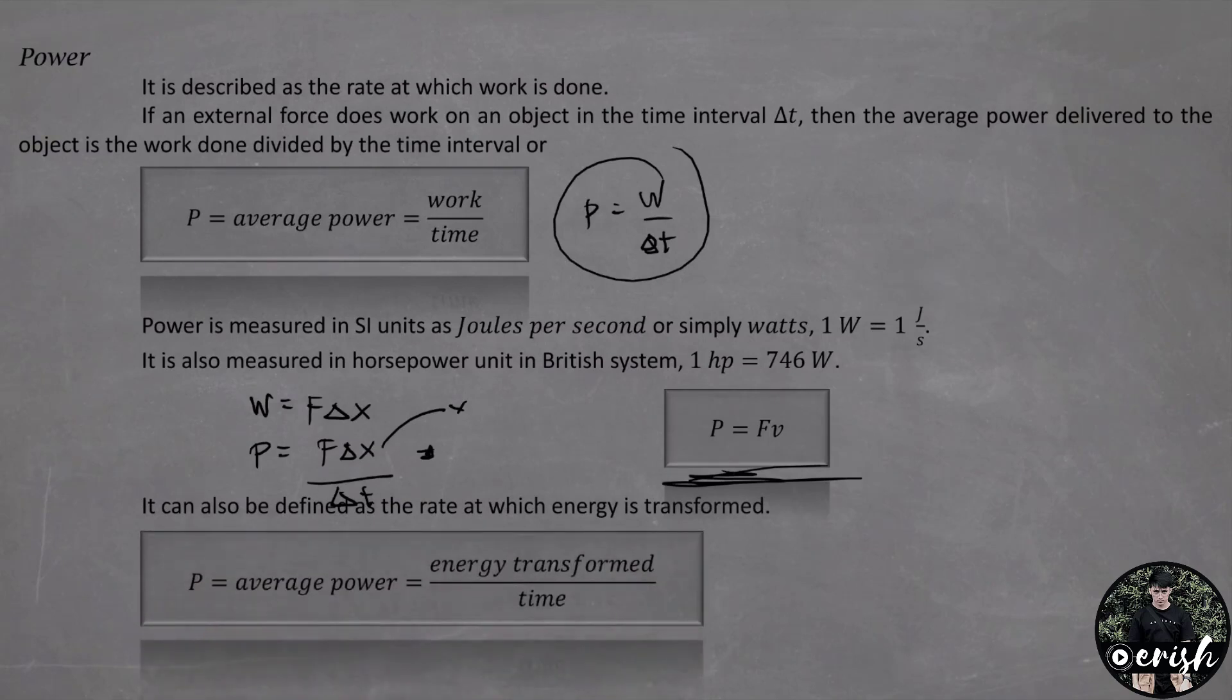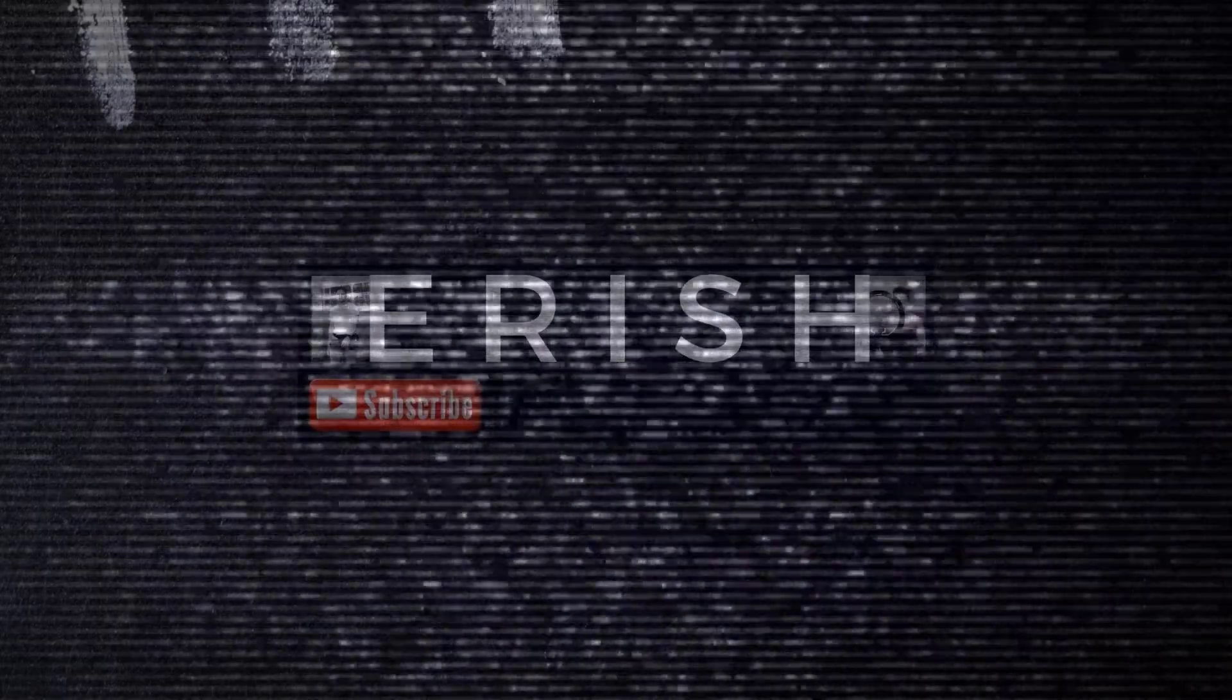An equipment of 2.8 kilowatts has to lift a 350 kilogram table to an elevation of 15 meters. Find the time the equipment will take to lift the table.